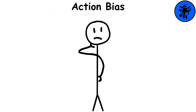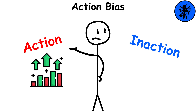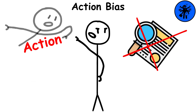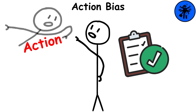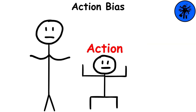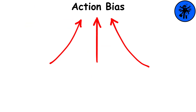Action bias. This describes our tendency to favor action over inaction, often to our benefit. However, there are times when we feel compelled to act, even if there's no evidence that it will lead to a better outcome than doing nothing would. Our tendency to respond with action as a default, automatic reaction, even without solid rationale to support it, has been termed the action bias.